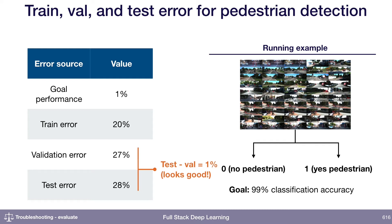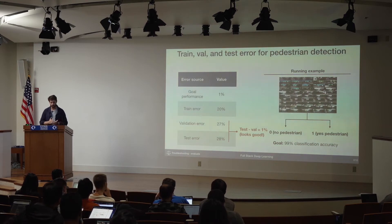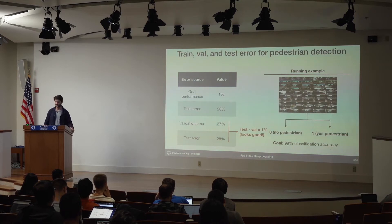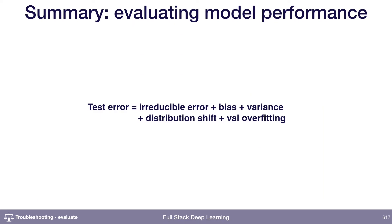So we're underfitting and we're overfitting — what's the first step we would take to address this? To summarize, the strategy for evaluating a model's performance is relatively simple: look at your test error and decompose it into some irreducible error, some bias, some variance, maybe some distribution shift, and possibly some validation set overfitting. Those are the numbers that are going to tell you what to do next when you're improving your model's performance.